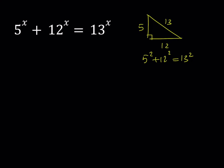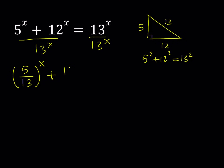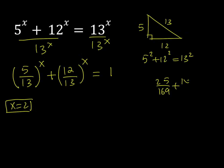In order to examine this equation, we're going to modify it a little bit. Let's divide both sides by 13 to the power x to make it easier to handle. Separating the terms gives us 5 over 13 to the power x plus 12 over 13 to the power x equals 1. It's good to have 1 on the right-hand side and fractions on the left. We know x equals 2 is a solution, and we can verify: 25 over 169 plus 144 over 169 equals 169 over 169, which equals 1.